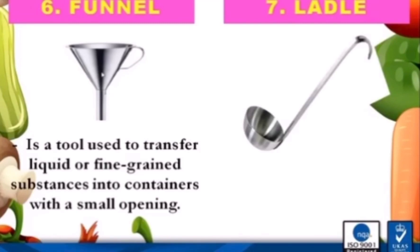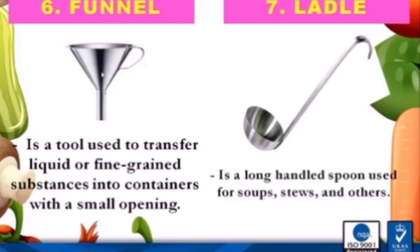Number seven is a ladle. This is the picture of a ladle. It is a long-handled spoon used for soups, stews, and others. A soup ladle is used for serving liquids like soup, sauce, or beverages. The shape of the ladle is commonly round or oval, sometimes with a pouring spout.